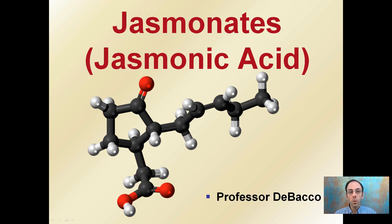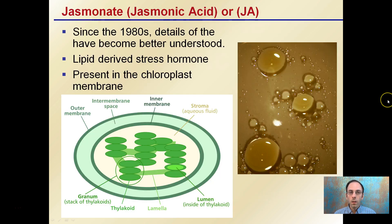Here I'm going to look at the plant hormone jasmonic acid, also known as jasminates. This can be abbreviated GA, and since the 1980s details have become better understood. This is one of those plant hormones that has kind of gone through some recent research and recent findings.